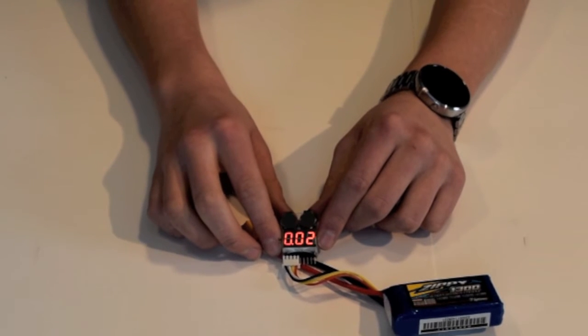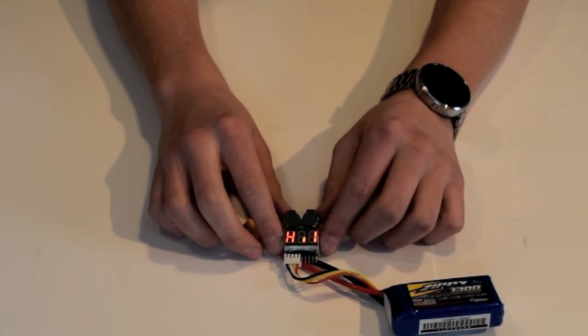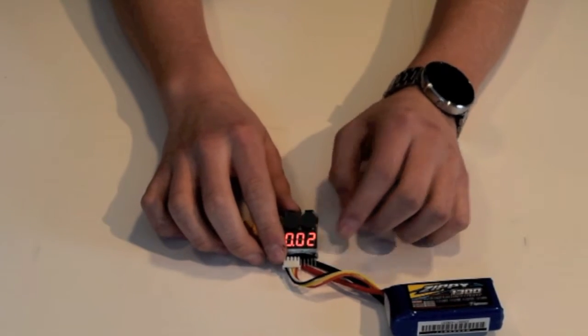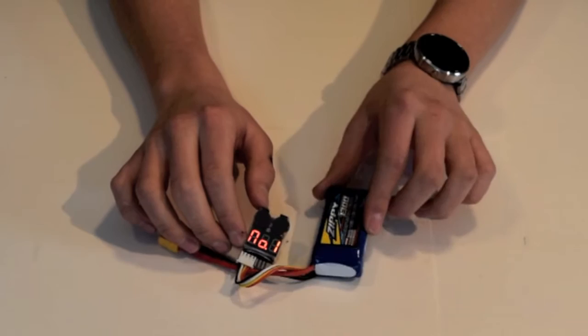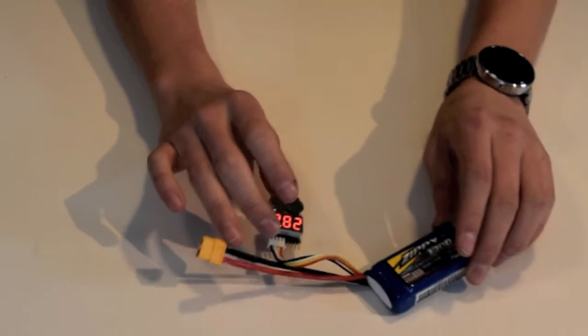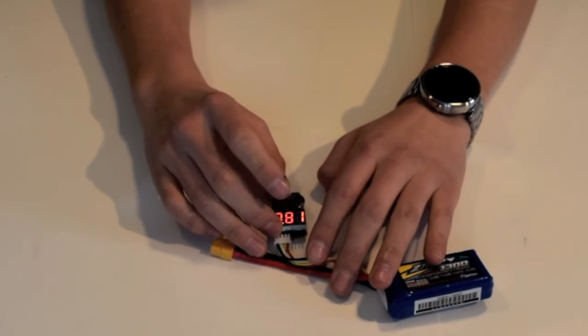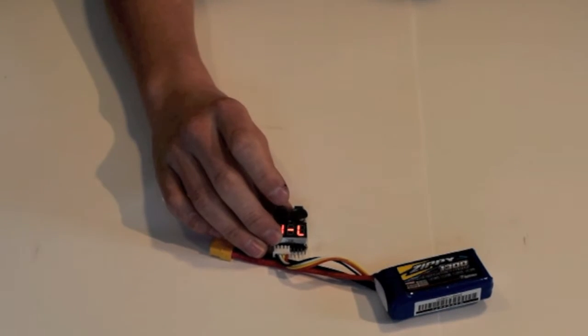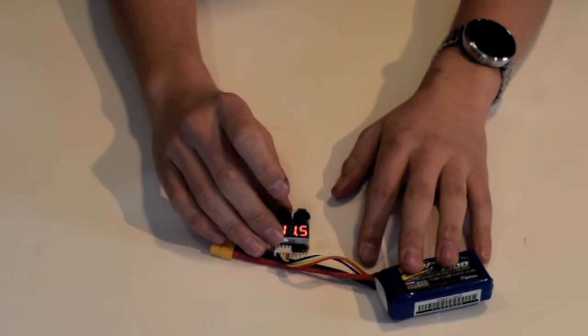So this thing is really useful for making sure you don't damage your LiPos, because if you overuse it so the voltage goes below somewhere around three volts, you're going to have problems.